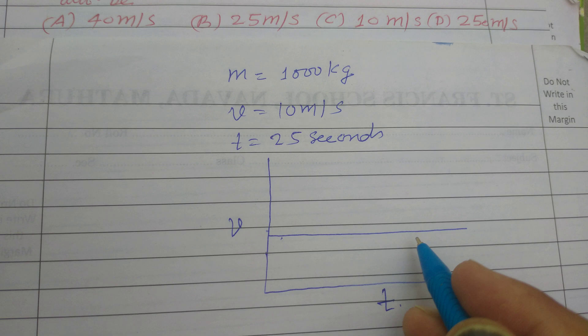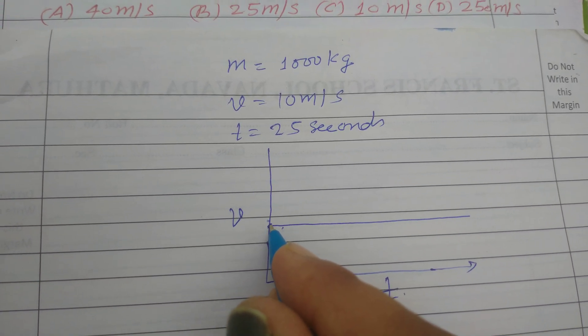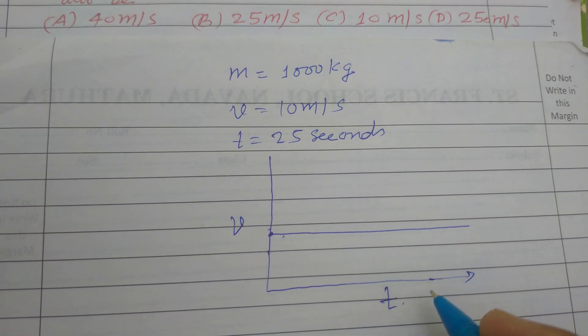Therefore, it is shown in figure that the velocity of the particle or car remains constant with time.